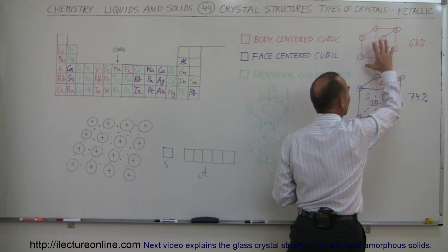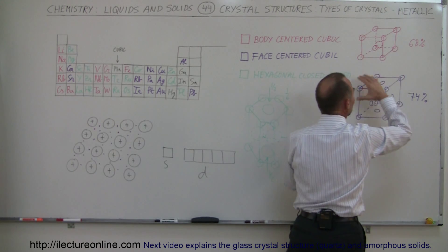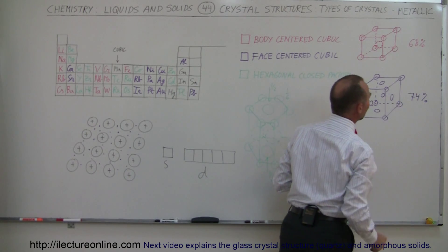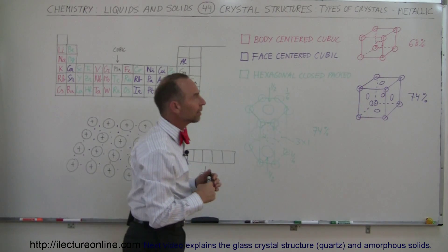When you have an arrangement like this, the ratio of the volume occupied by the atoms versus the space that's left over is 68% of the volume is occupied by the atoms.